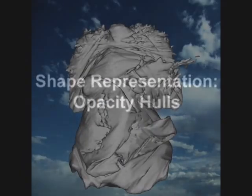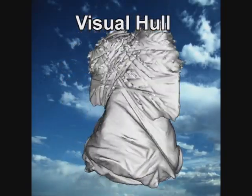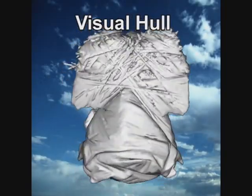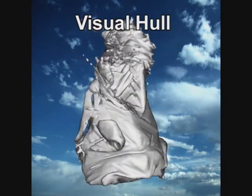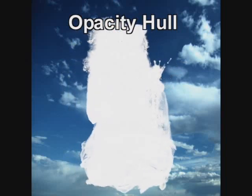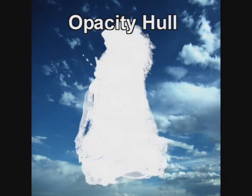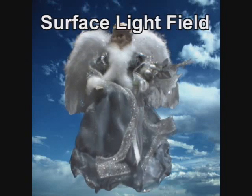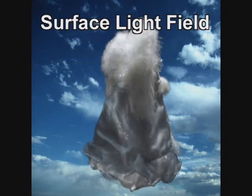We use the acquired silhouette images to construct a visual hull of the object. As can be seen, the visual hull is only a rough approximation to the surface geometry. To capture fine silhouette detail, we map view-dependent opacity onto each surface point of the visual hull. We call this new shape representation the opacity hull. Finally, we map the captured images of the object onto the opacity hull.